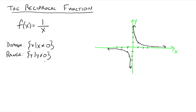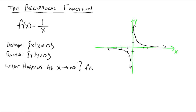Now, what happens as x goes to infinity? This notation means as x gets really large. As x goes off to positive infinity, all your y values are getting smaller and smaller, closer and closer to 0 — so f of x gets closer to 0. Same idea: if x goes out to negative infinity, then f of x would also get closer to 0, because your y values keep getting closer and closer to 0.